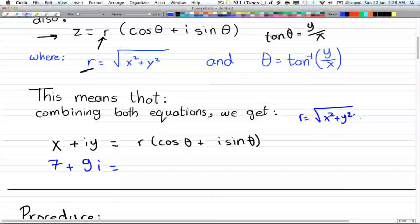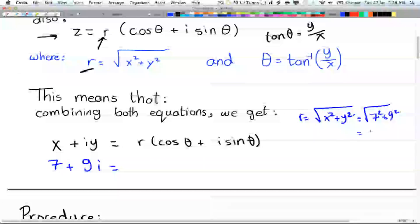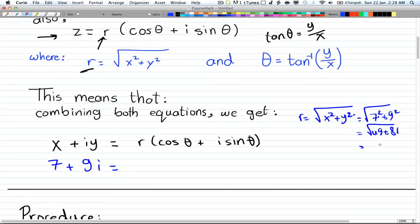This equals the square root of 7 squared plus 9 squared, which equals the square root of 49 plus 81, which is the square root of 130.